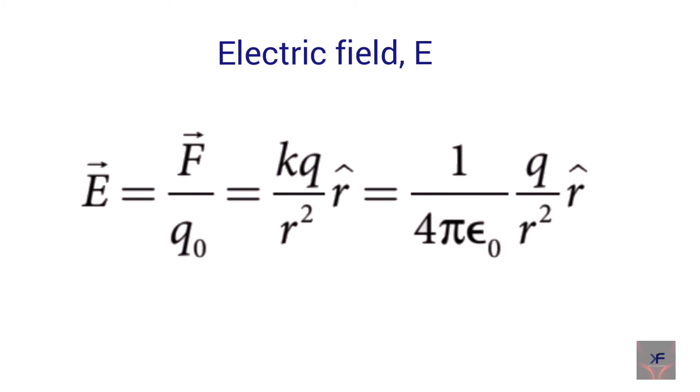Now substitute the value of K. You will get the electric field. Here R vector is a unit vector pointing from Q to the point P.